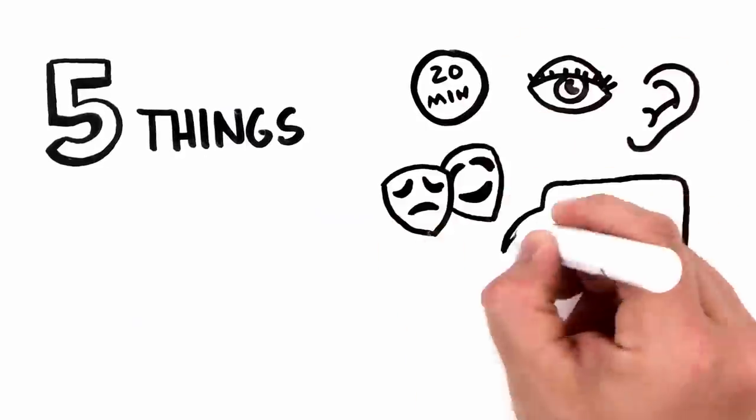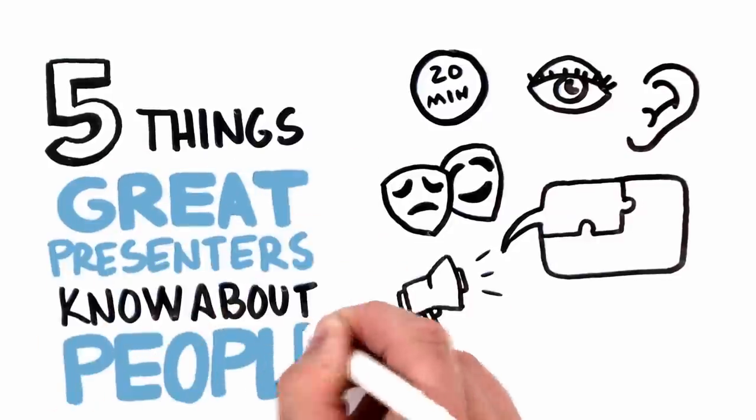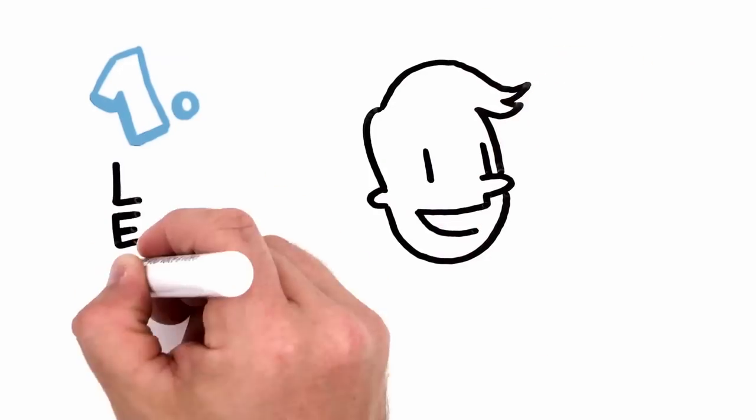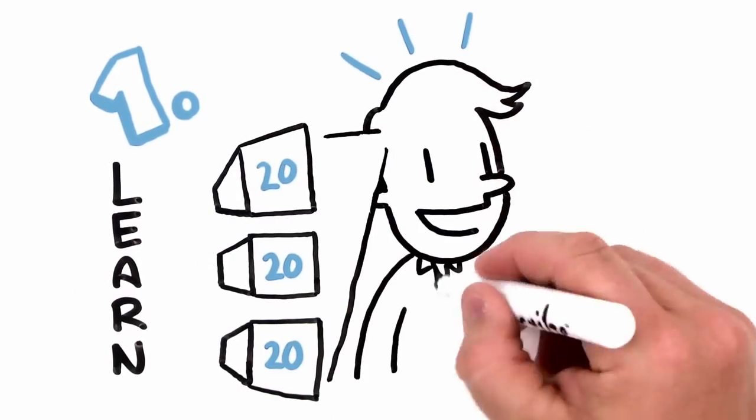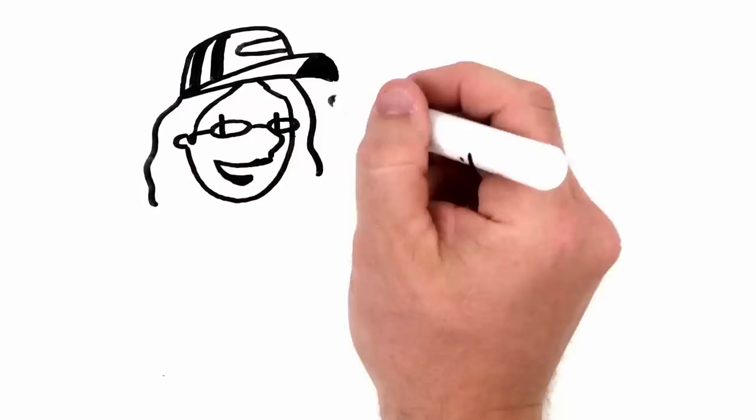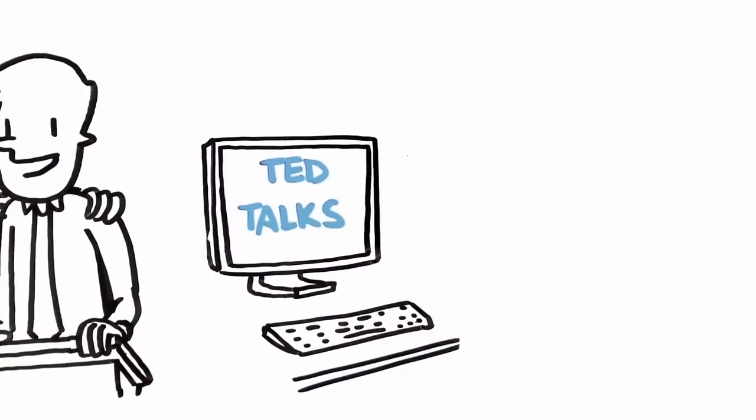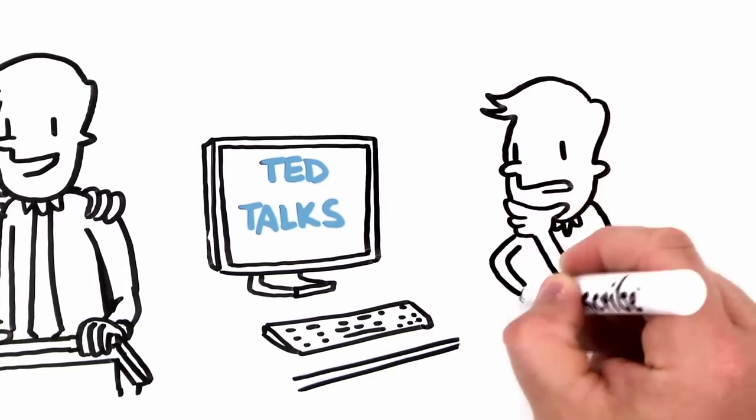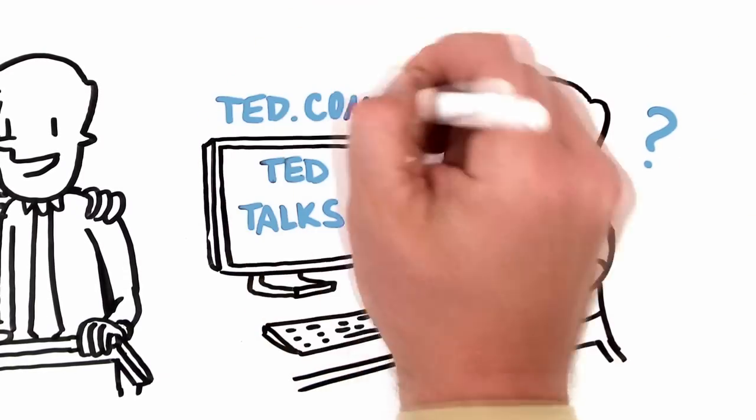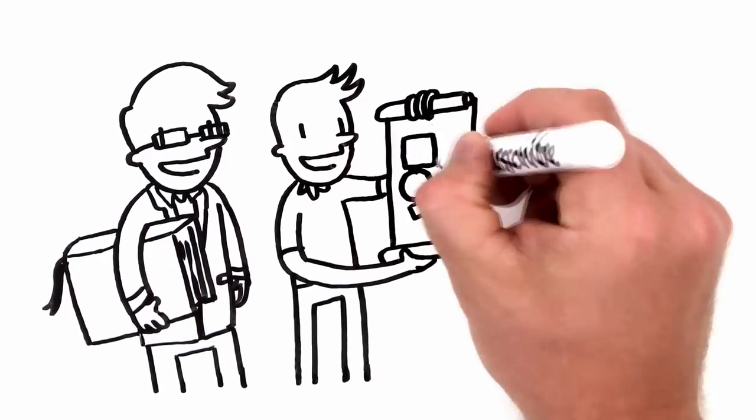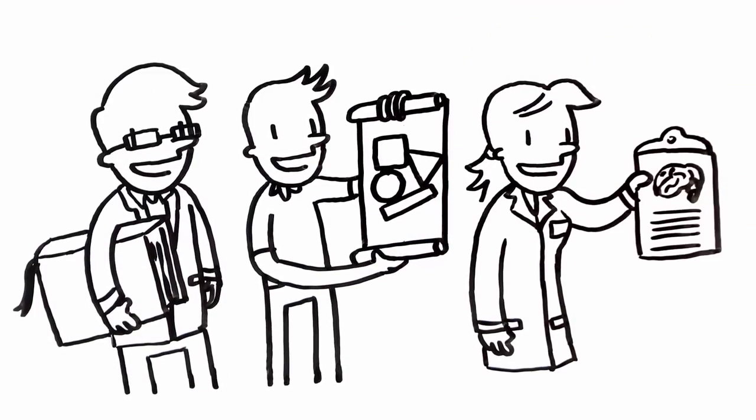...are five things that great presenters know about people. Number one: people learn best in 20-minute chunks. When I'm coaching and mentoring people on presentations, I tell them to go watch TED talks. If you aren't familiar with TED talks, you should check it out at ted.com. These are short talks by accomplished people in their fields, and interestingly...